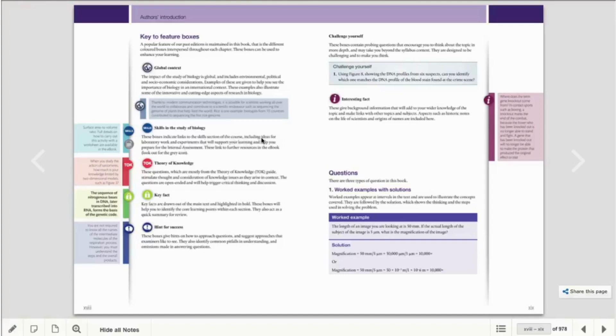These boxes indicate the links to the skills section of the course, including ideas for lab work and experiments that will support your learning and help you prepare for the internal assessment. There's also TOK, which stimulates thought and consideration of knowledge. Key facts are drawn out of the main text and highlighted in bold.